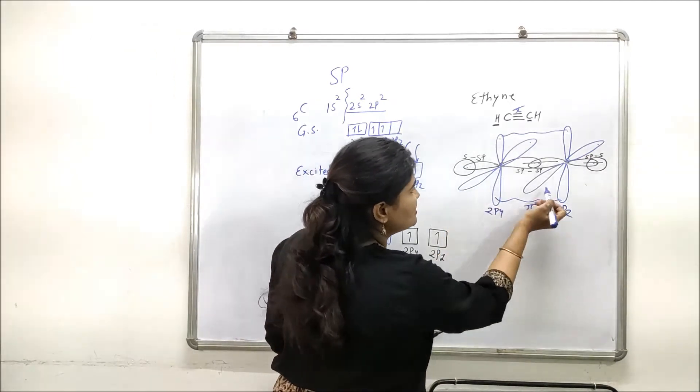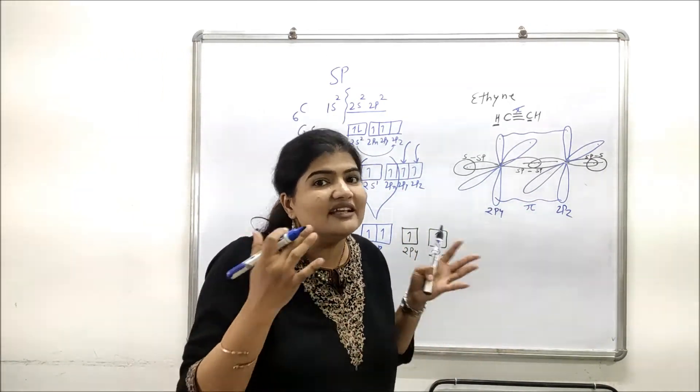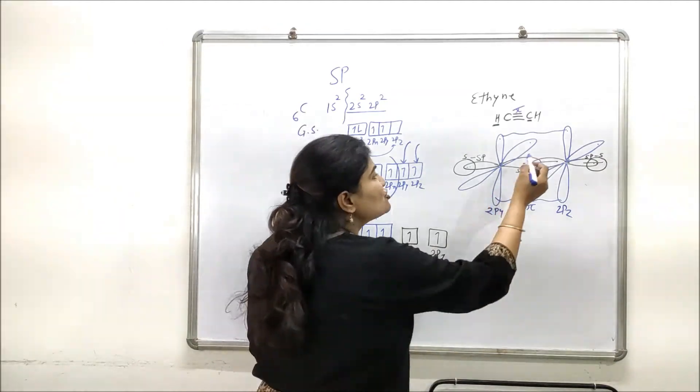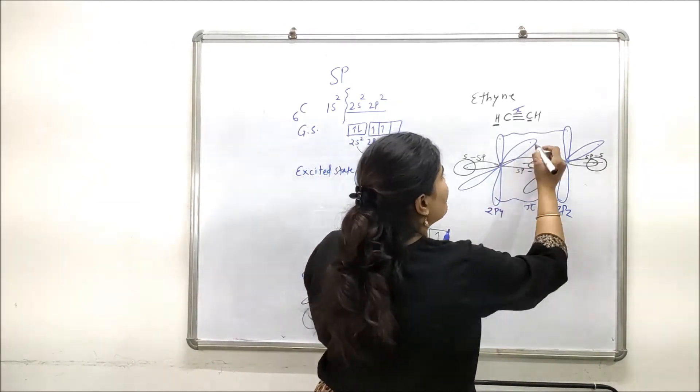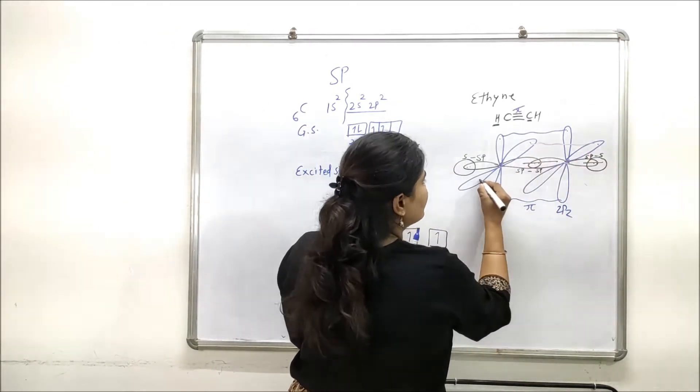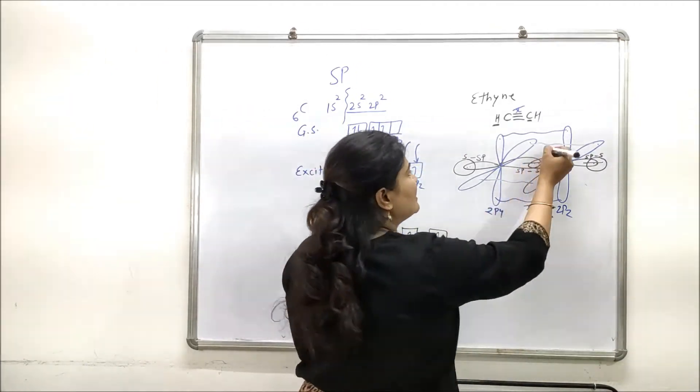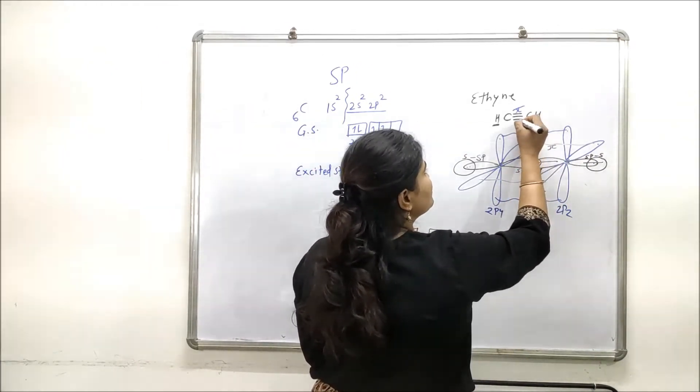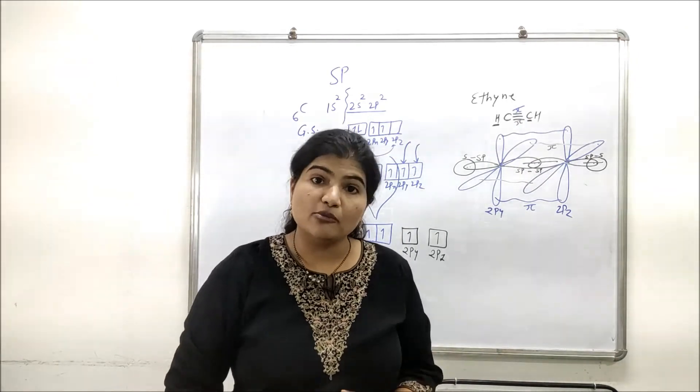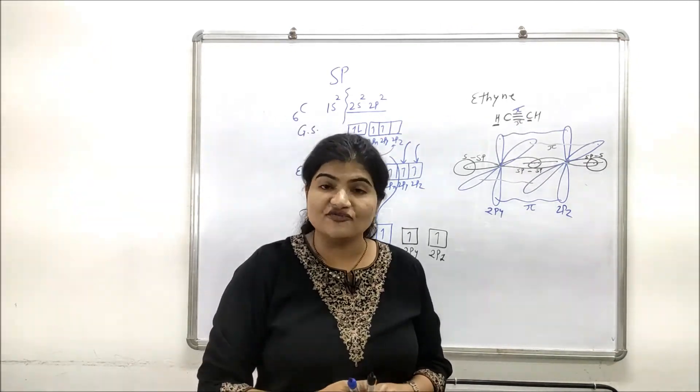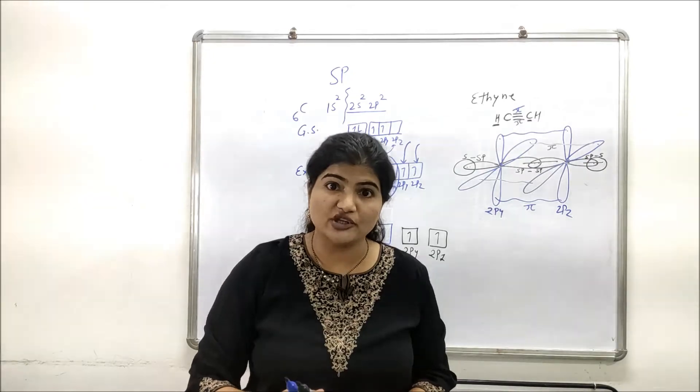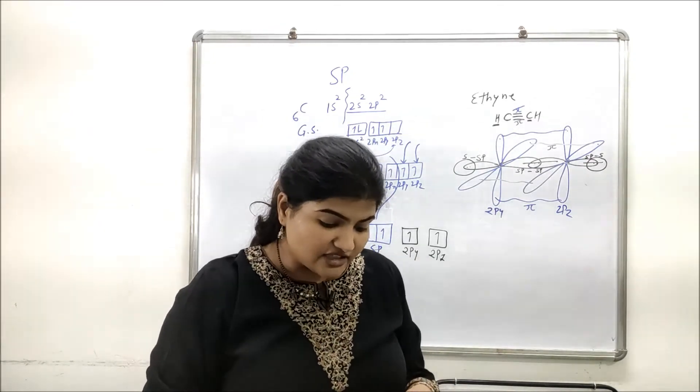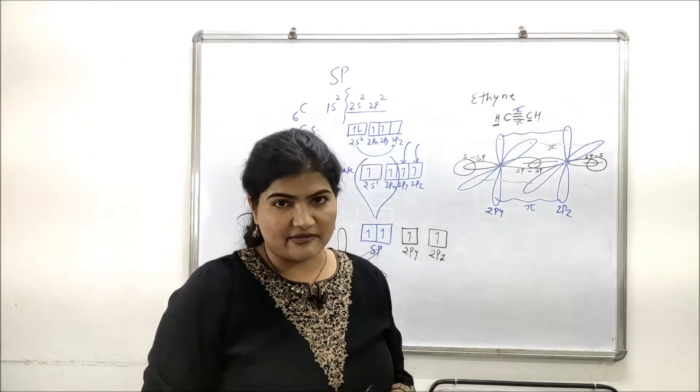And then this 2pz and this 2pz, again their planes are similar, their alignment is practical, so they will also form a pi bond between this 2pz and this 2pz. So another pi bond will be formed, which is this pi bond. When there is a triple bond between carbon and carbon, out of three bonds only one bond is a sigma bond and the other two bonds are pi bonds.